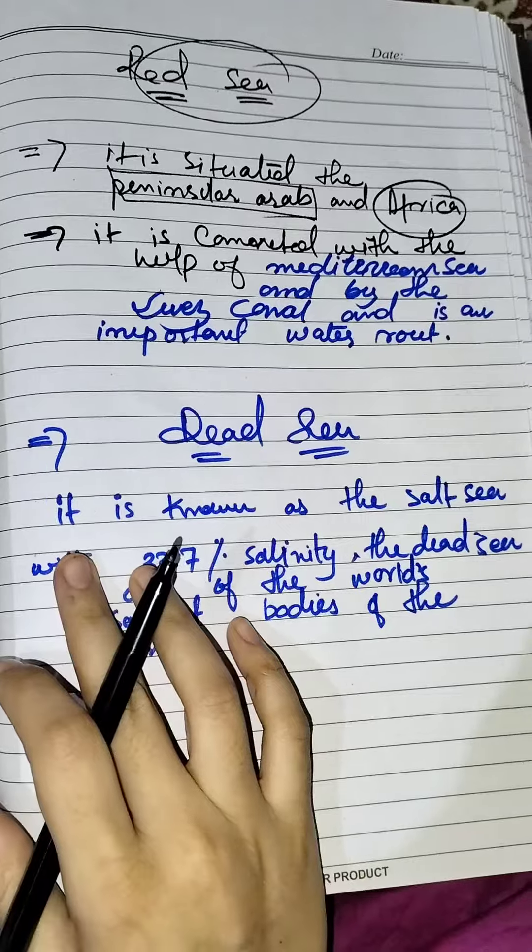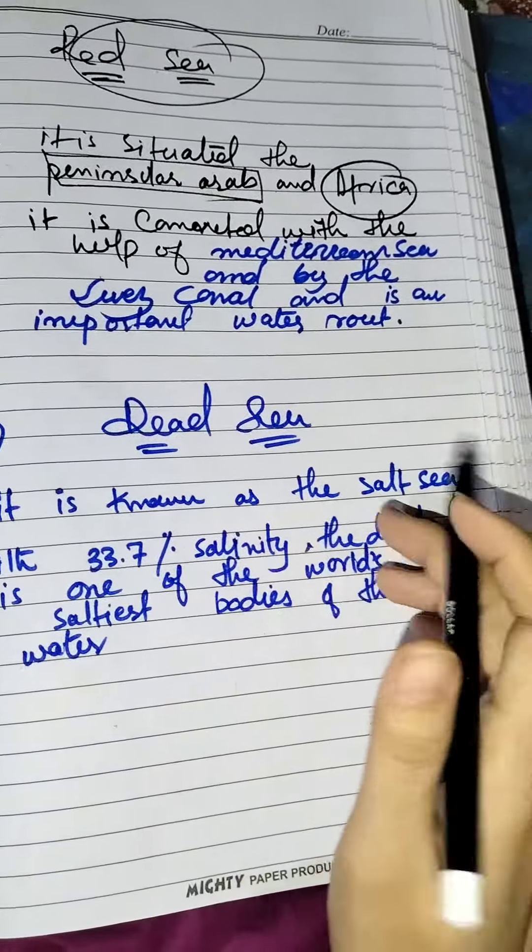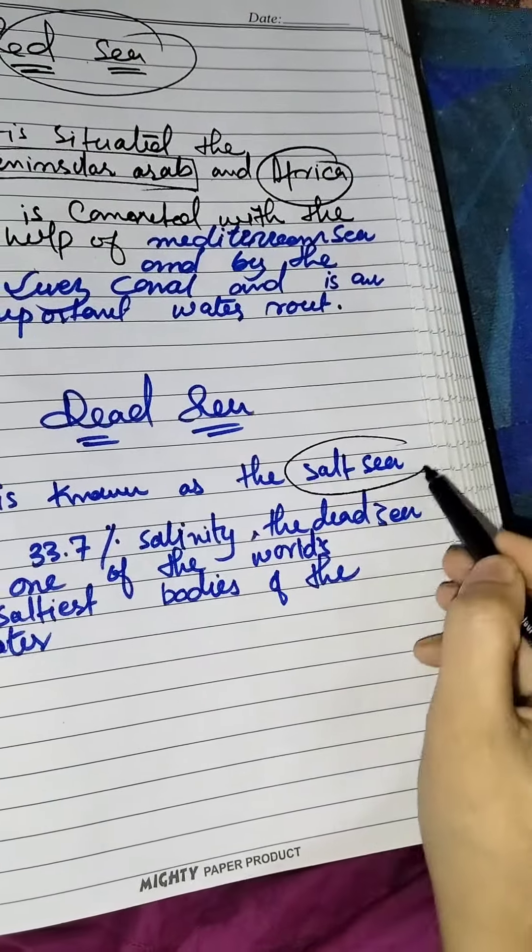The Dead Sea is known as the saltiest sea in the world. With 33.7% salinity, the Dead Sea is one of the world's saltiest bodies of water.